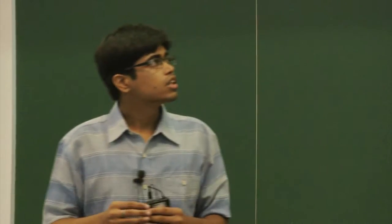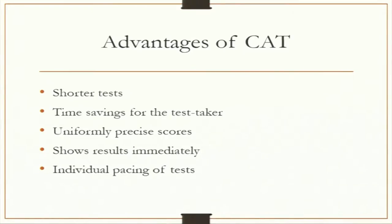Now I move towards the advantages of CAT. In contrast to fixed-length tests, where students must attempt all questions, computerized adaptive testing allows for shorter tests. We set a maximum test length, but the CAT tends to finish earlier if the termination criteria is satisfied. It saves the time of test takers, generates precise scores that match the accuracy of the examinee, and displays results immediately.